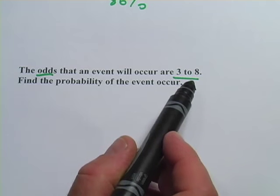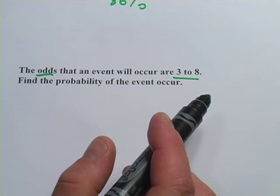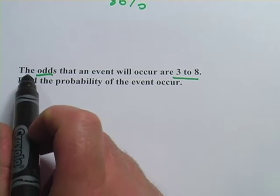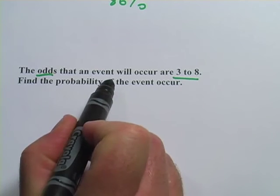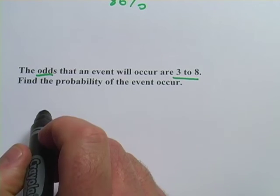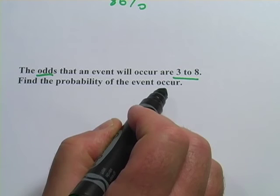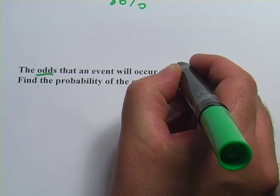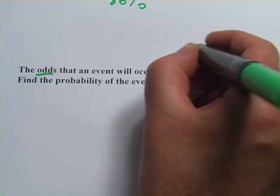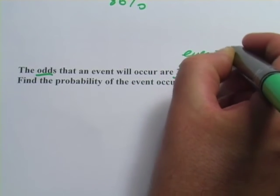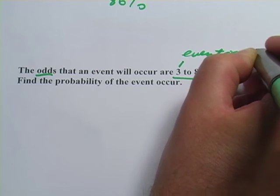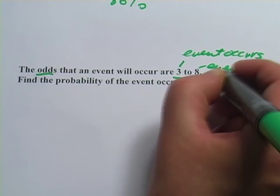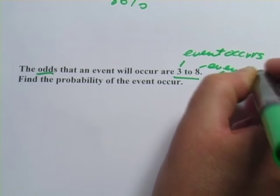You can't look at this the same way you look at fractions or percents or decimals and probabilities. What this means, the odds that an event will occur are three to eight. Find the probability of the event occurring. So three to eight, what this means is that there are three chances for the event occurring and eight chances that the event doesn't occur.